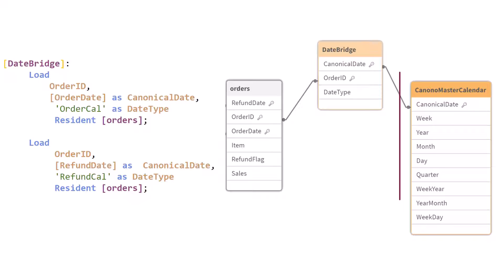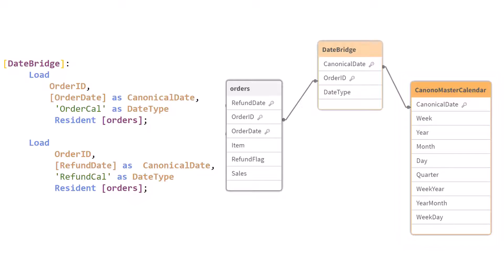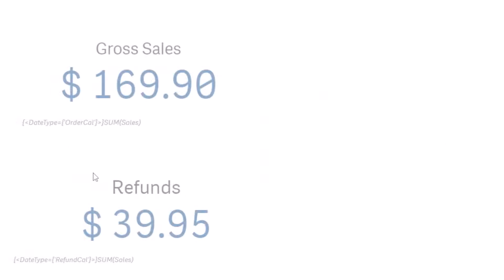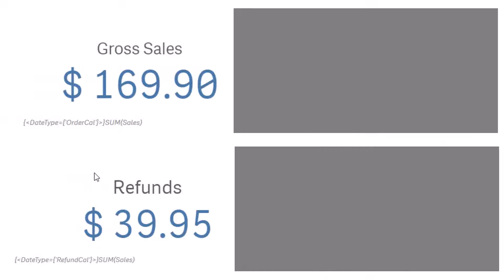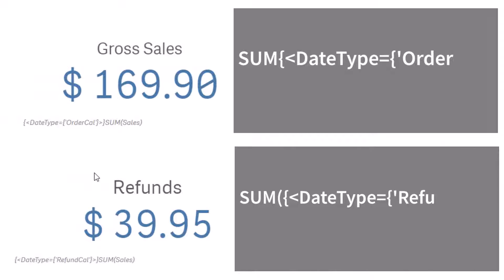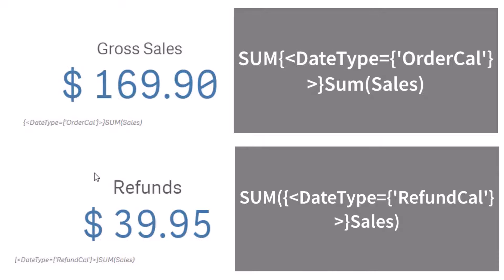You can link this to a master calendar if you require more granular time periods. Your charts and visualizations could then use aggregated measures with the defined date type in a set expression to show the specific results.